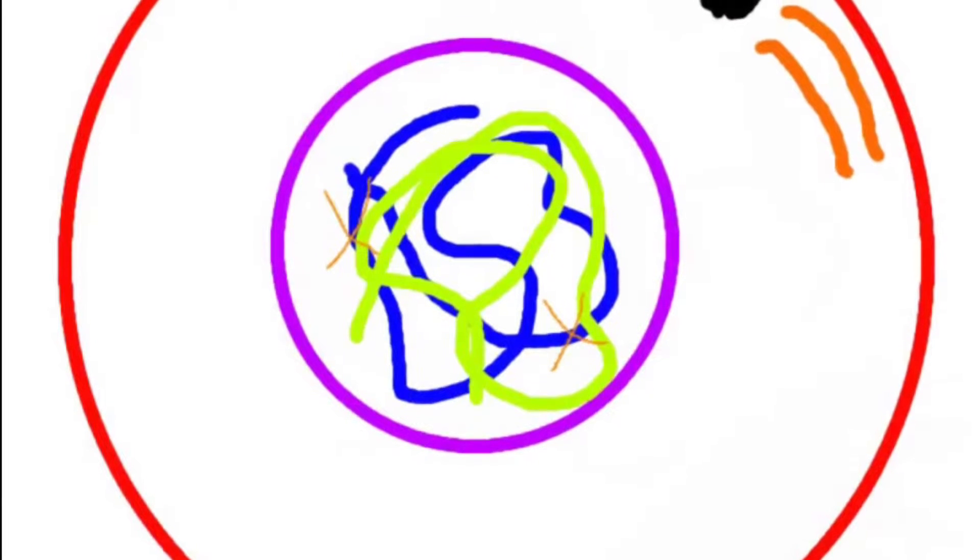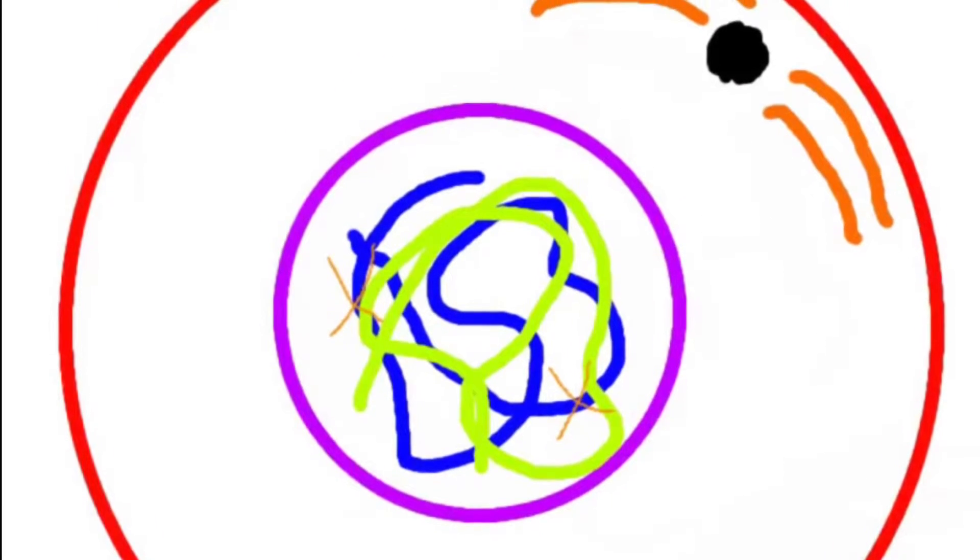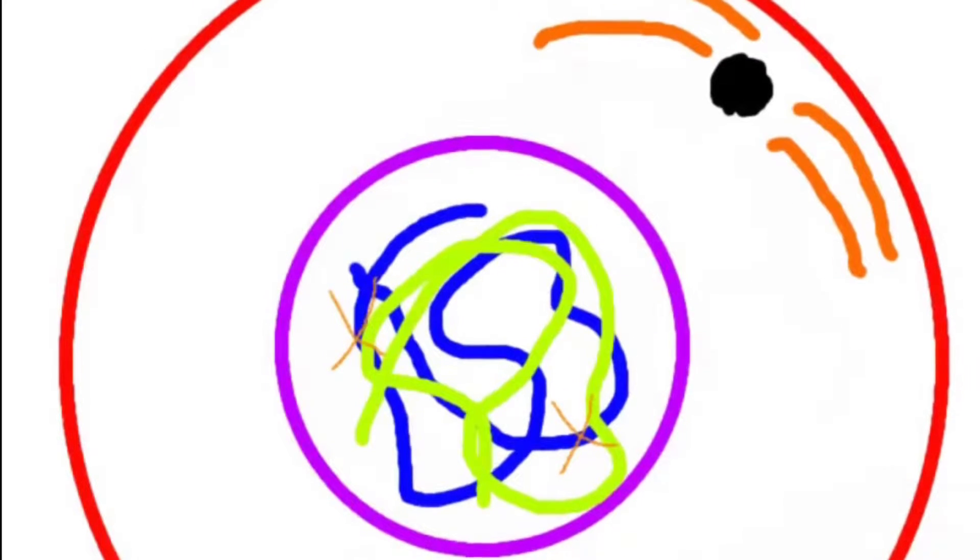Before mitosis, each chromosome makes an exact duplicate of itself. The chromosomes then thicken and coil within the nucleus.